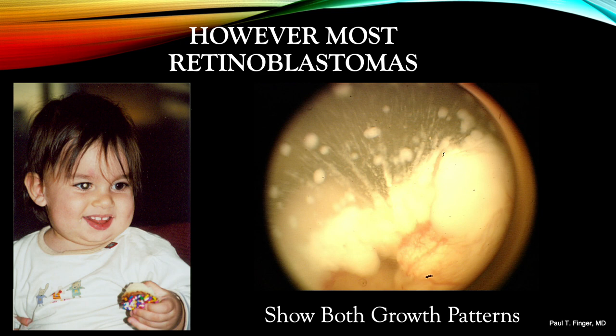Small isolated tumors amenable to fluorescein angiography are more commonly seen in countries with well-developed medical systems, where patients are found early with AJCC T1 cases or monitored and found to have small recurrences.